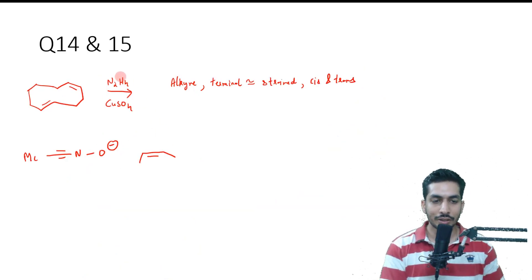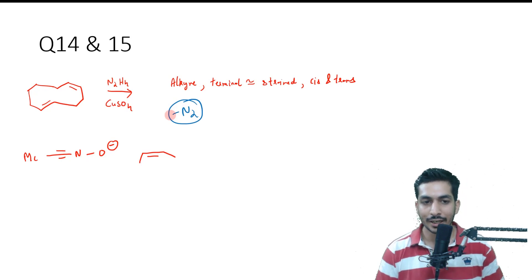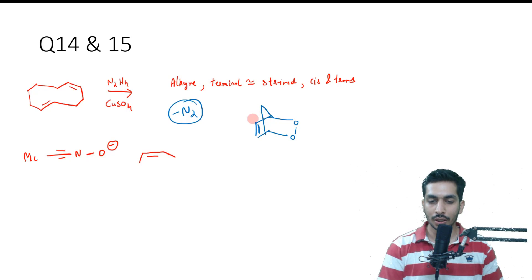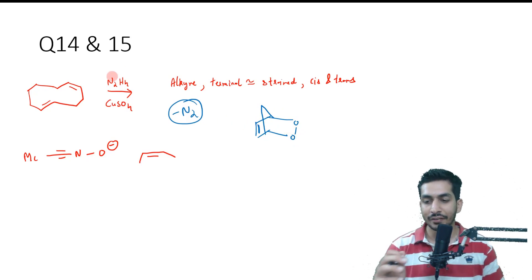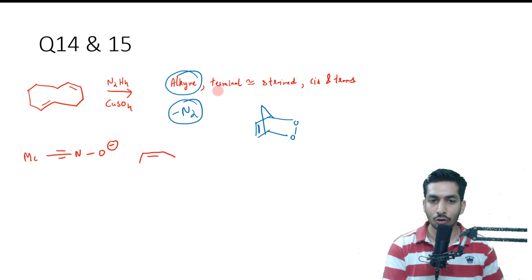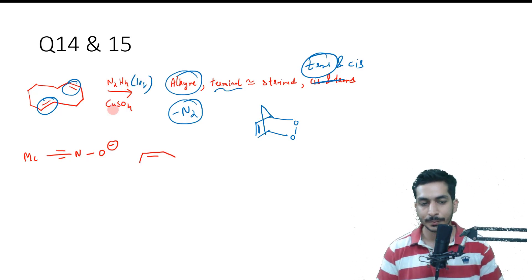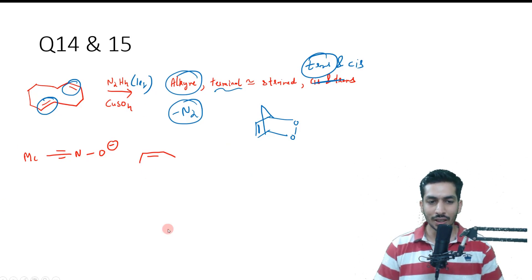There was a question on diimide reduction. In diimide reduction, always remember that N₂ is eliminated — it is a very good reduction reaction, very popular for reductions where sensitive groups are present. For example, if you want to reduce a double bond in the presence of an O–O bond, other reagents will fail, but diimide works well. Generally, alkynes are reduced very quickly, followed by terminal and strained alkenes. Trans alkenes are reduced before cis — this one is trans, so it gets reduced. With only one equivalent given, the other double bond remains intact.